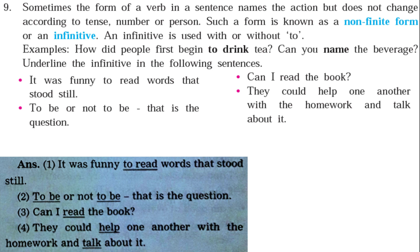Infinitive examples: Sentence one — 'It was funny to read words that stood still.' Here, 'to read' is an infinitive. Sentence two — 'To be or not to be? That is the question.' Here, 'to be' is an infinitive. Sentence three — 'Can I read the book?' Here, 'read' is the infinitive. Sentence four — 'They could help one another with the homework and talk about it.' Here, 'help' and 'talk' are infinitives — bare infinitives without 'to.'